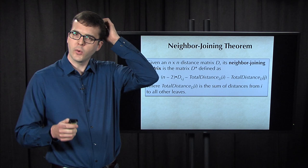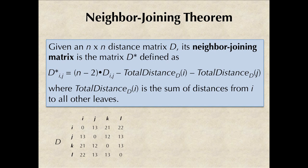Let me give you an example. Here's the matrix that we encountered before where j and k corresponded to the minimum element of the matrix, but j and k were not neighbors in the tree that fit this matrix.